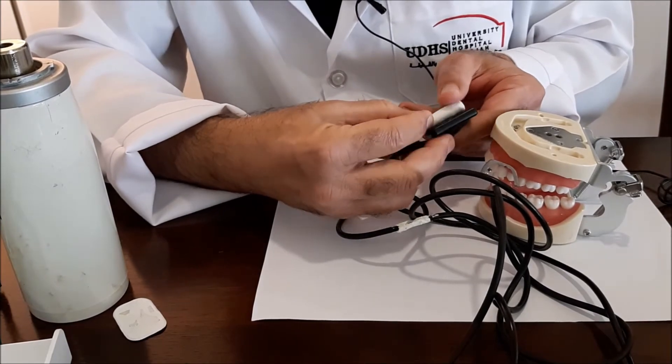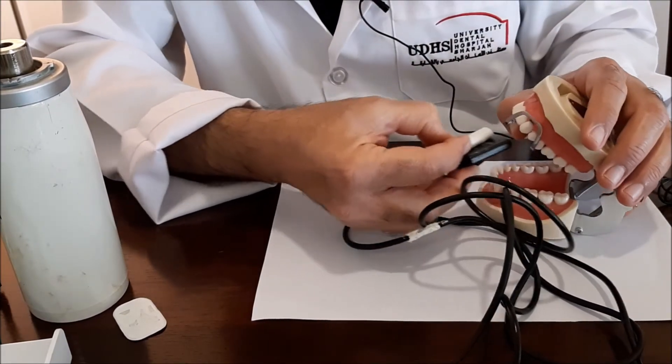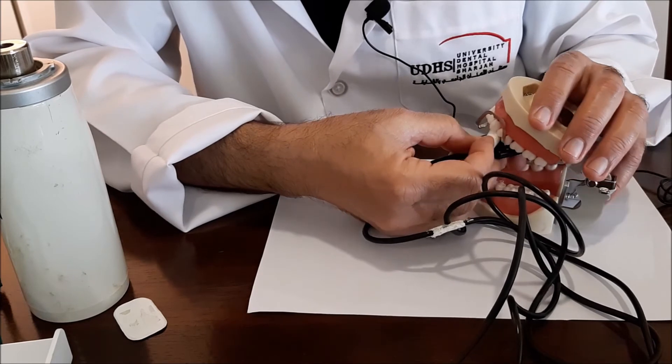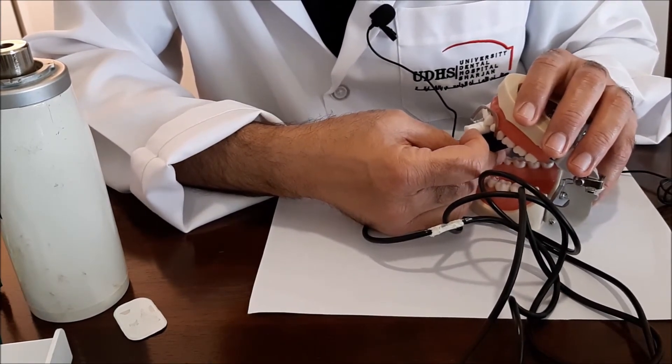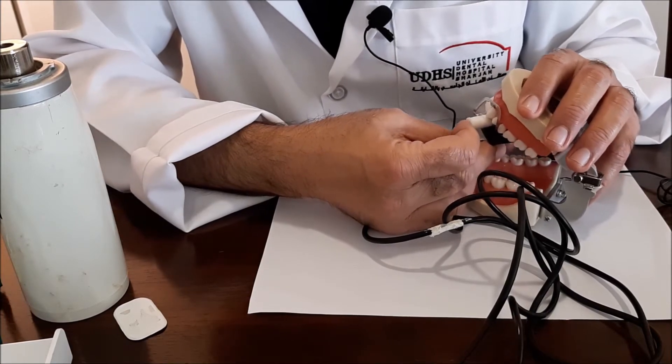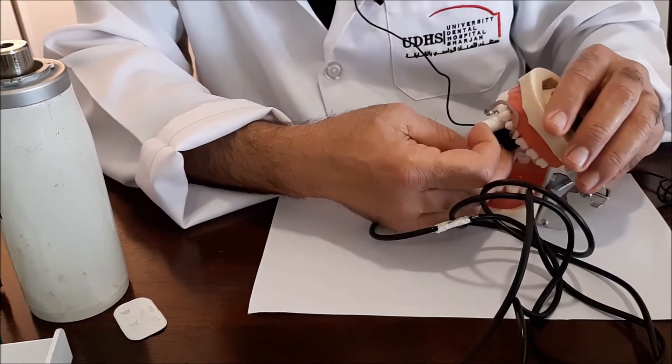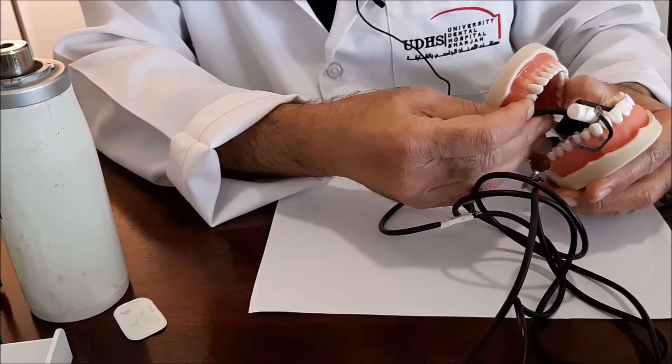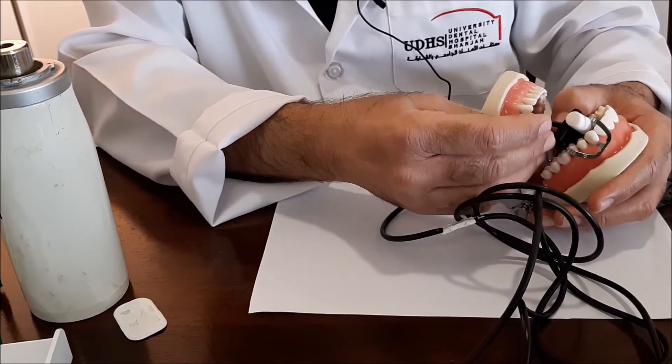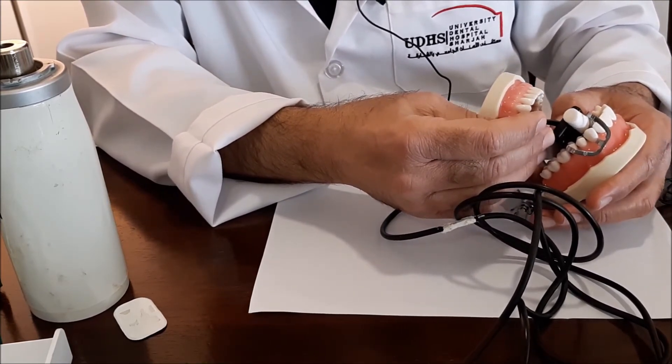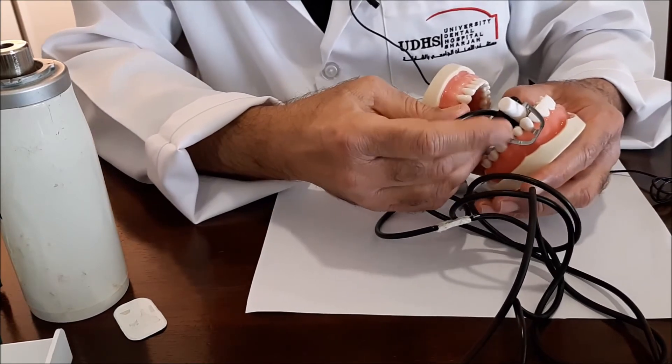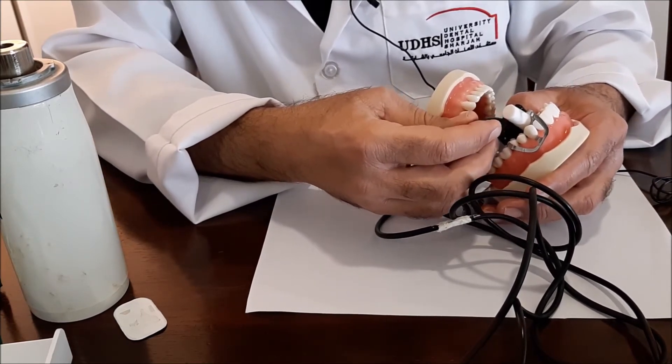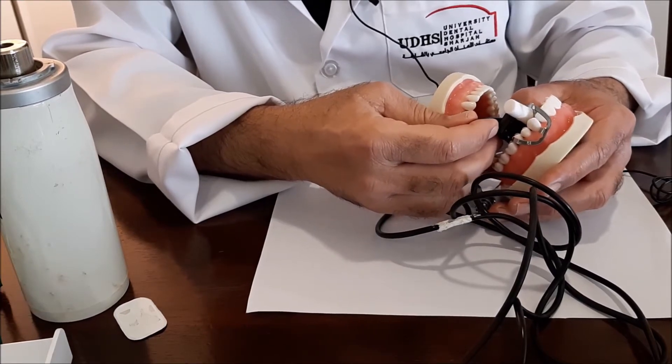You place your cotton roll, and then you tilt the sensor so that the longest dimension of the sensor will be located behind the canine. And this is how it looks from the back. See, by so doing you have utilized your longest length or the longest dimension of the sensor.